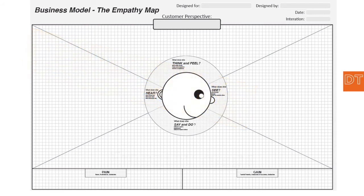Let me fill it in and take you through it step by step. In the middle you see this head which depicts iconically what people see — that's the eye — what they hear, which is the ear, and what they say, which is the mouth, and also do, which is more than just a mouth but is in the same area. And on the top side, what do they think and feel.